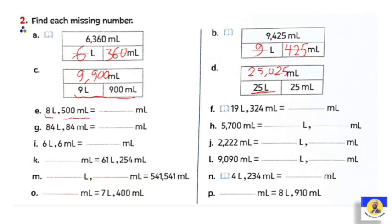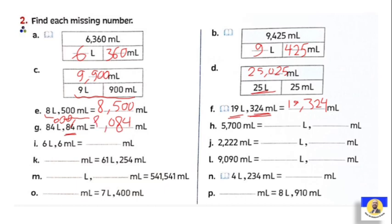Continuing question two: 84 liters converts to 84,000 mL - add three zeros, giving 84,000. Next: 5700 mL = 5 liters and 700 mL. Then: 6 liters and 6 mL = 6000 + 006 mL. 2222 mL = 2 liters and 222 mL. Then 61 liters and 254 mL combined together. 9090 mL = 9 liters and 90 mL.